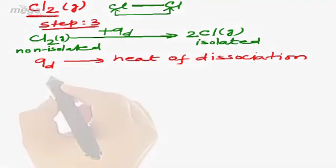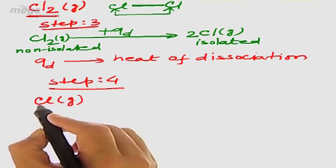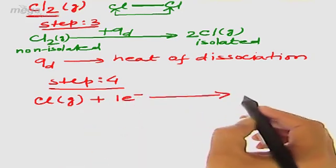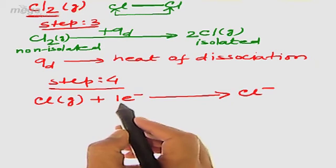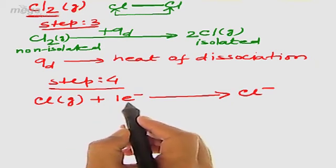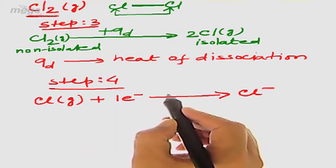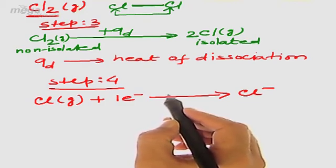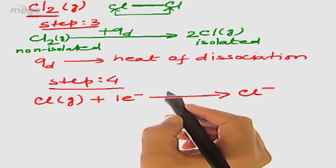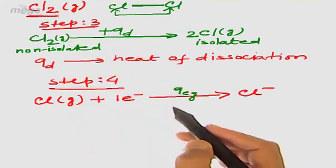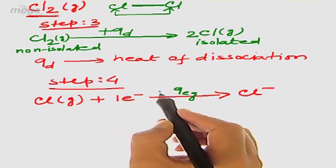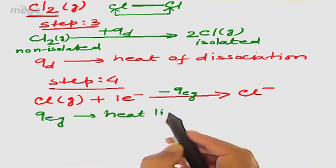In step 4, chlorine which is isolated and gaseous will gain the electron from sodium and convert into Cl−. As an electron is added to the valence shell of the chlorine atom, an electron previously free from the nucleus's attractive force now comes under that attractive force. Hence, there will be a loss of energy, and that energy is called electron gain energy or electron gain enthalpy. Enthalpy represents the heat content of a system. We write QEG — Q for heat, EG for electron gain — and use a minus sign since energy is being liberated during electron gain.